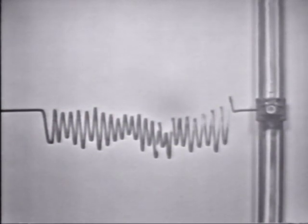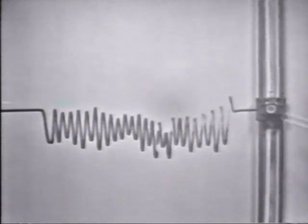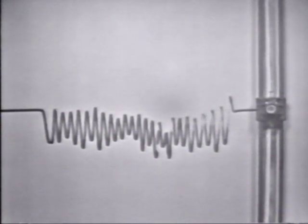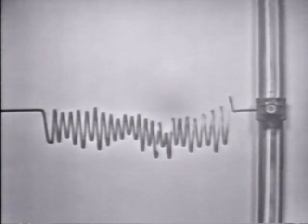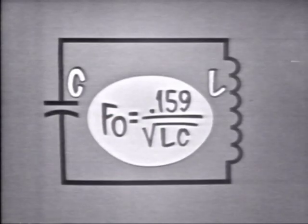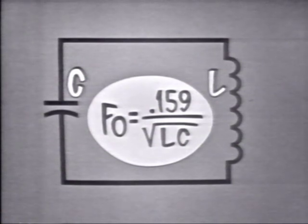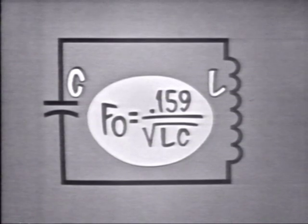Let's compare the two. The rubber bands and the weight determine the frequency of the bounce. Resistance causes the amplitude of the bounce to gradually decrease. But if we feed energy to the device, it will bounce continuously.